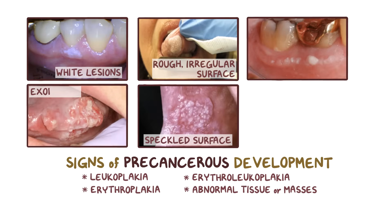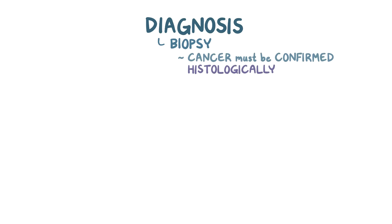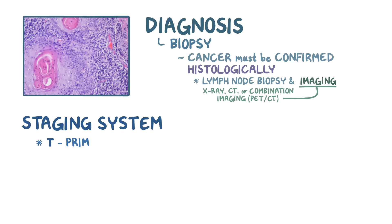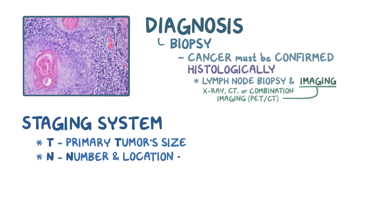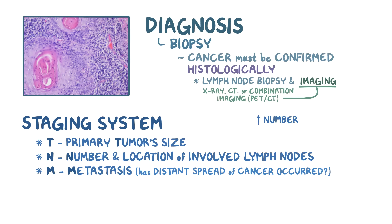As the tumor grows, some become exophytic, where it grows outward, or endophytic, where it grows inward. Diagnosis typically includes a biopsy of the tissue because the cancer has to be confirmed histologically. A lymph node biopsy and imaging such as an X-ray, CT, or combination imaging like PET-CT might be necessary for tumor staging. The staging system consists of T for the primary tumor's size and involvement of surrounding structures, N for the number and location of involved lymph nodes, and M for metastasis — the higher the number assigned to any of these components, the higher the stage and the worse the prognosis.